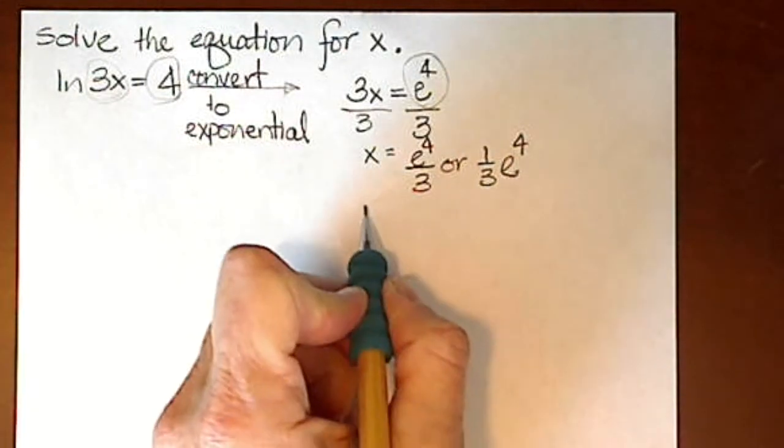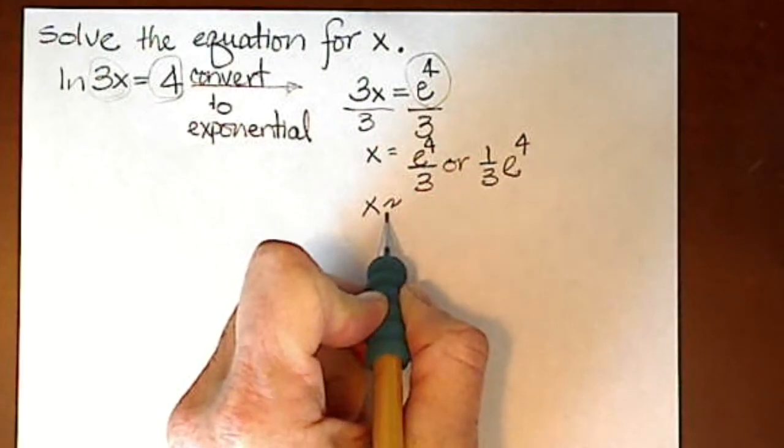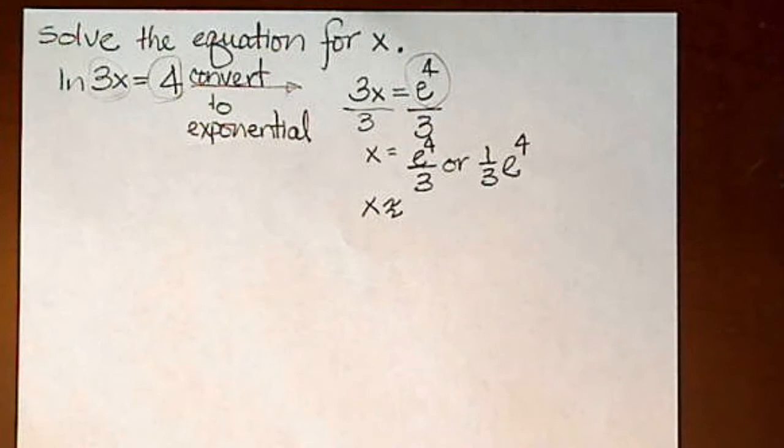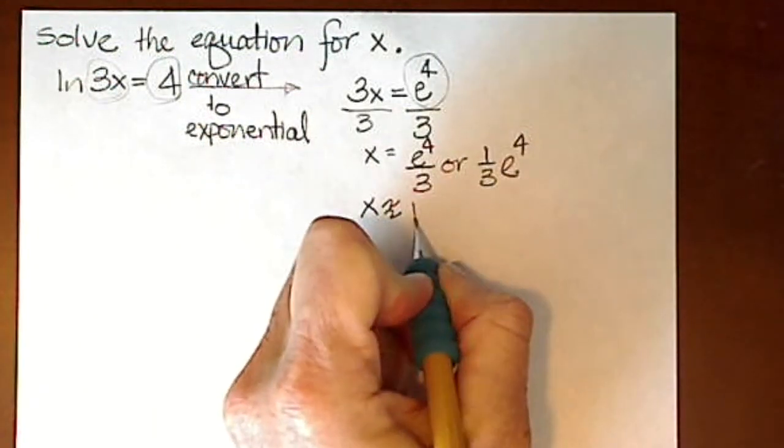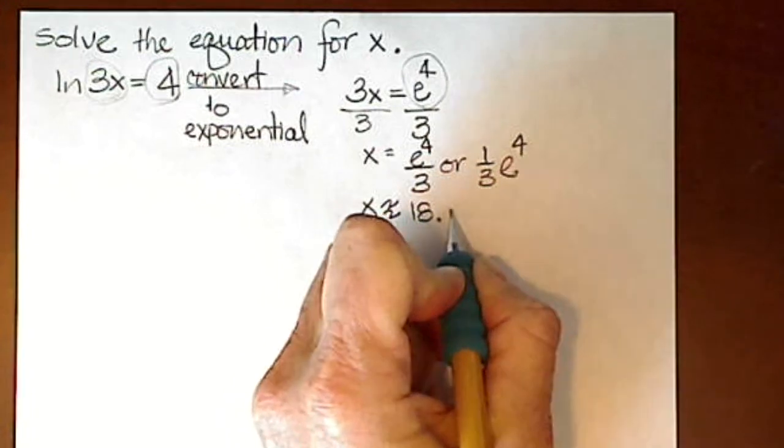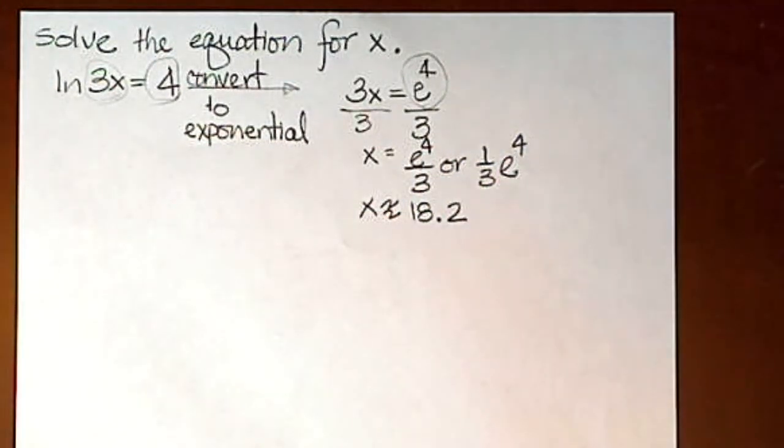For an approximate answer, we would substitute this into a calculator. To one decimal place, we get x approximately equals 18.2.